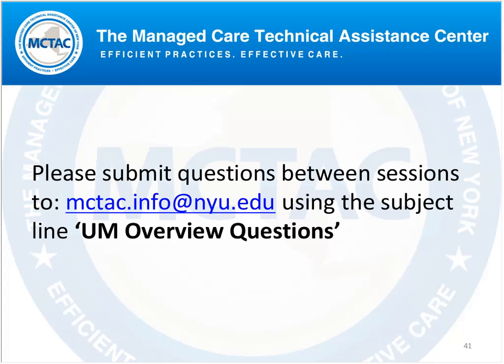What is the difference between utilization review and utilization management? Within state regulations there is a requirement that agencies participate in utilization review, which is an internal process. Utilization management is the review process conducted by the managed care organization. They are very similar but distinct — the expectation for utilization review comes from state regulations, while the expectations for utilization management are driven by the managed care organizations you work with.